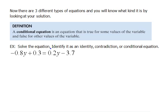So I'm going to subtract 0.2y from the right and from the left to keep it nice and balanced because doing the opposite will remove it from that side. So we have negative 0.8y and negative 0.2y is negative 1y plus 0.3 equals negative 3.7.